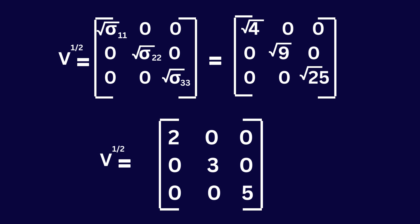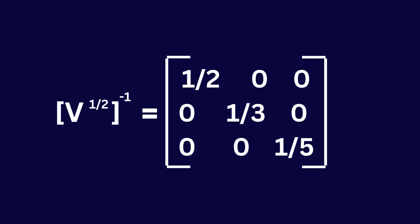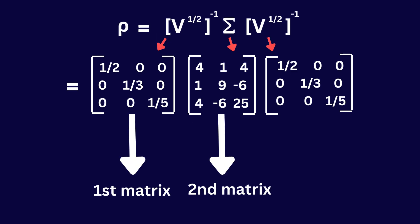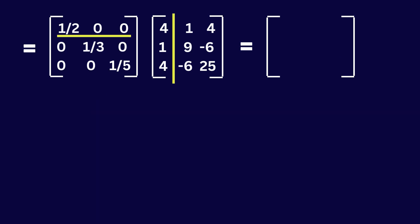This is our standard deviation matrix. Now get the inverse of the standard deviation matrix — this is the inverse of the standard deviation matrix. Now we have all the matrices we need to calculate the correlation matrix. Our correlation matrix can be calculated using this formula. You have to use your knowledge of matrix multiplication — first multiply the first two matrices.